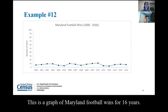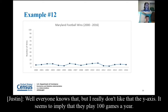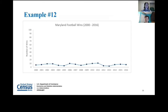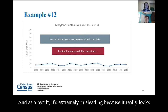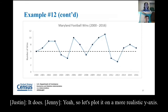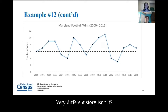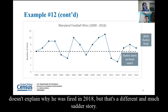Here's another example — a graph of Maryland football wins for 16 years. What's wrong with this? The y-axis seems to imply that they play 100 games a year, which would be a lot for a college football team. This is a y-axis that is just not consistent with the data, and as a result it's extremely misleading because it really looks like this is an awfully consistent football team. When we put it on a more realistic y-axis, it's a very different story — which might explain why Durkin started as head coach in 2015.